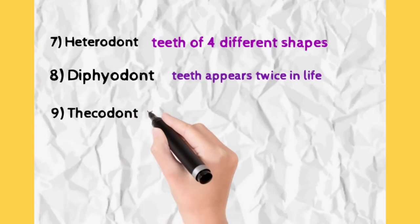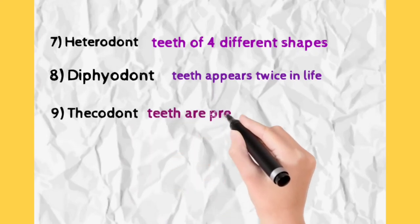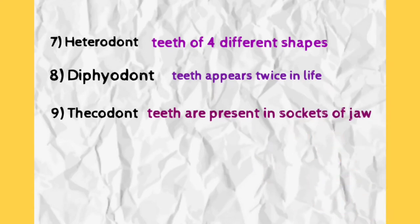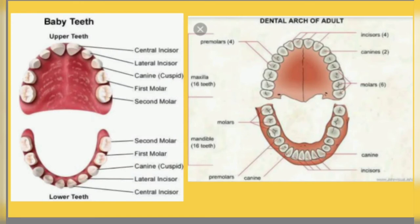Then we have the term thecodont. Thecodont means our teeth are present in the socket of jaw. These three words - heterodont, diphyodont, and thecodont - are used to describe human dentition. We can see it in this diagram clearly. The baby teeth or milk teeth are represented on the left side, and permanent teeth on the right side. Milk teeth are embedded in the socket of bone, and all these teeth are unequal.